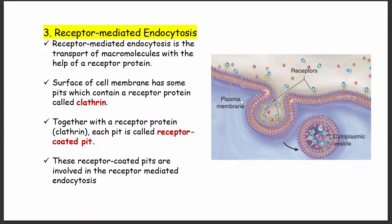A receptor is a molecule found on the surface of the cell membrane. When molecules come in contact with receptors — for example if they are toxic — they are held by the receptor, a signal is sent to the inside of the cell, and the cell brings the molecule inside to be destroyed.